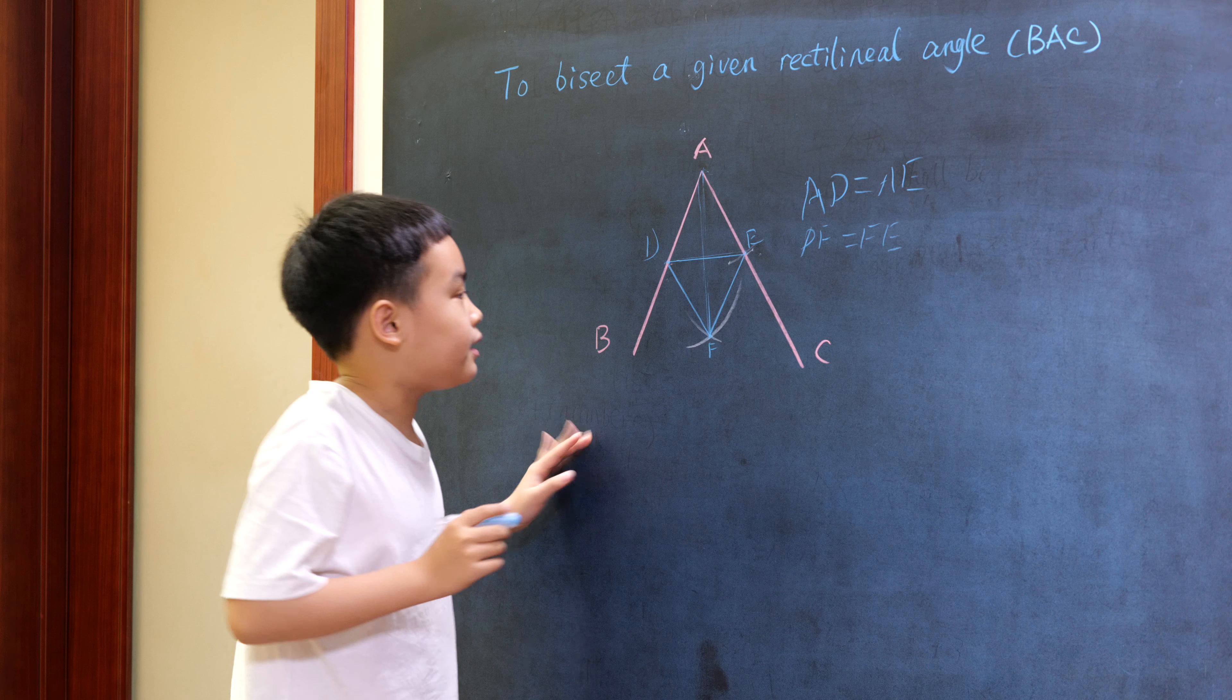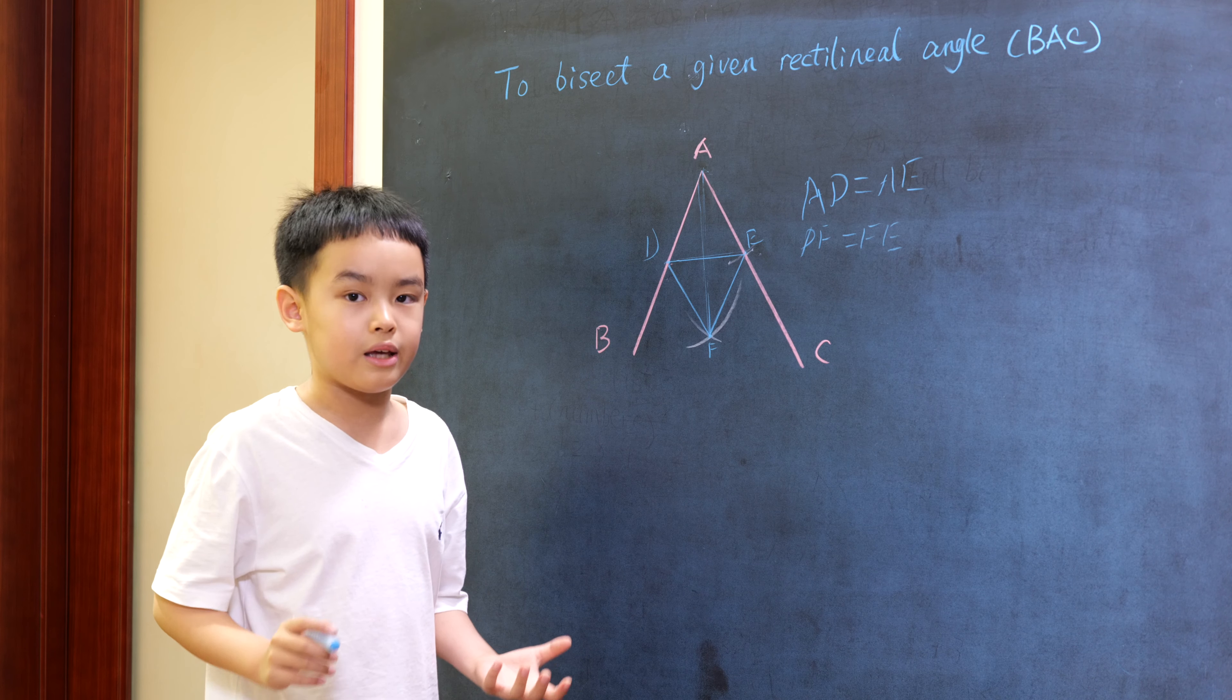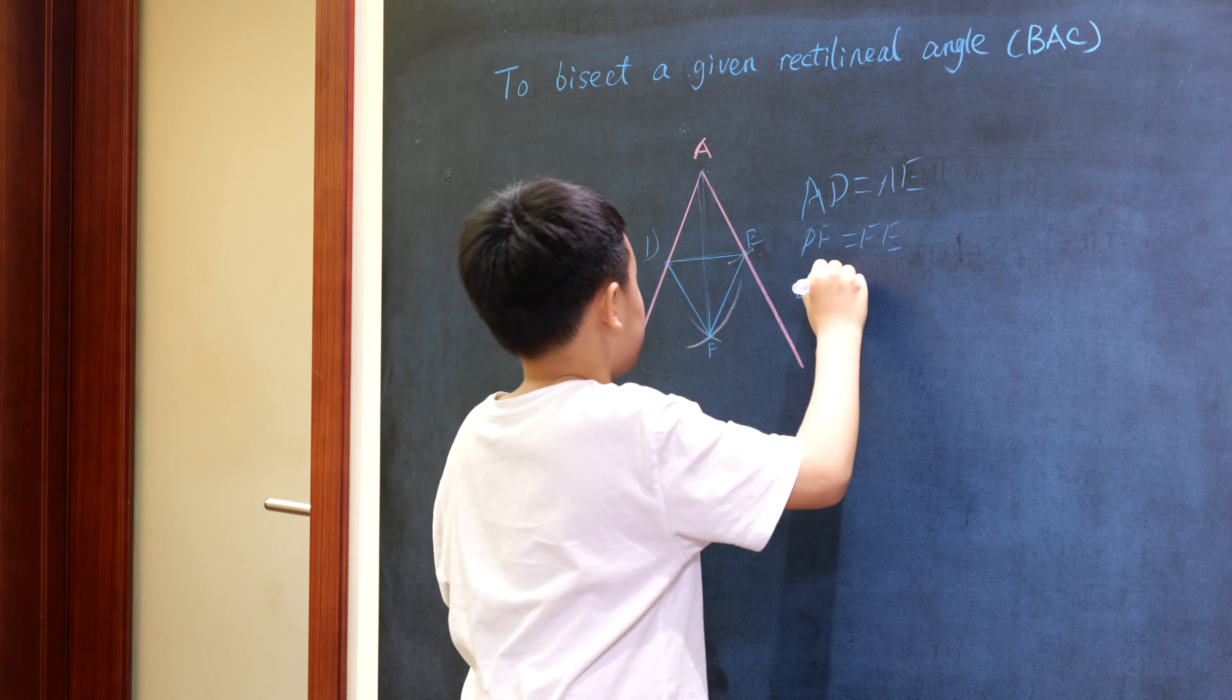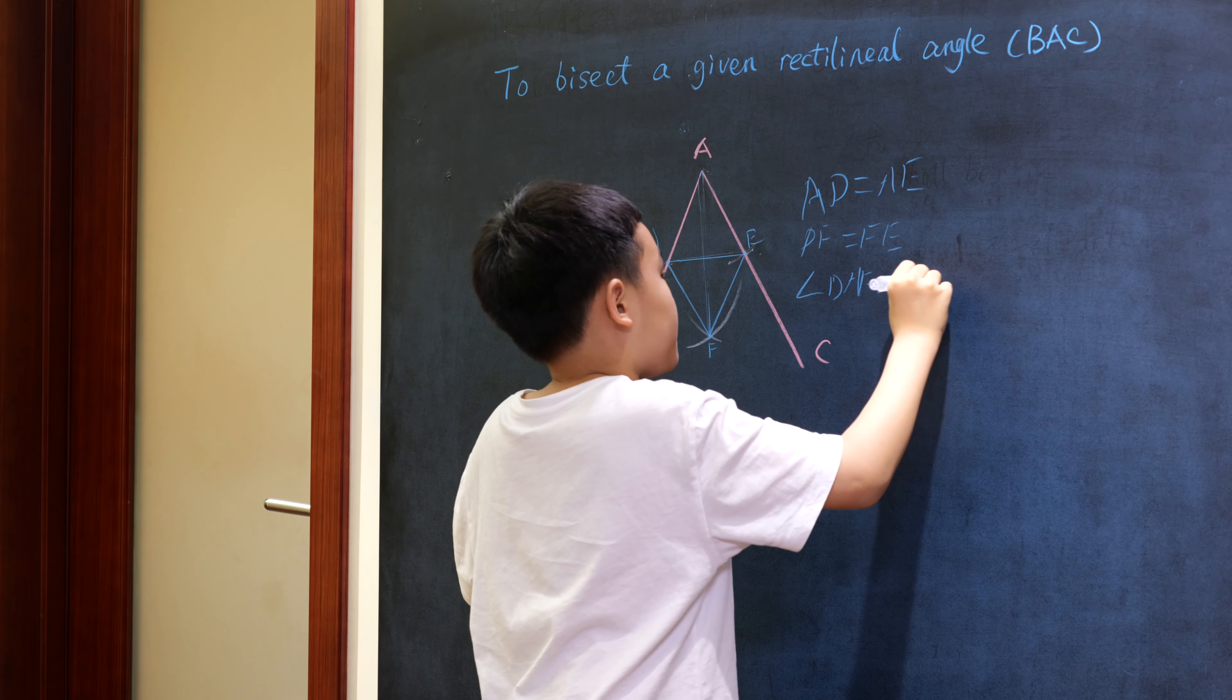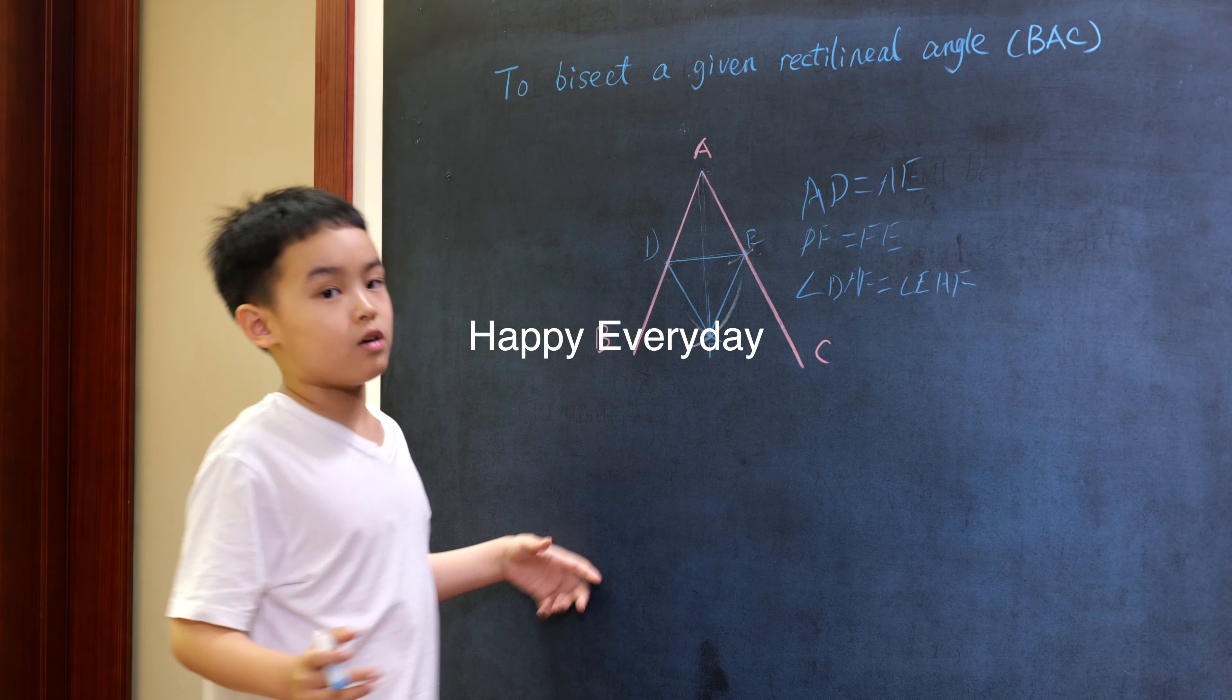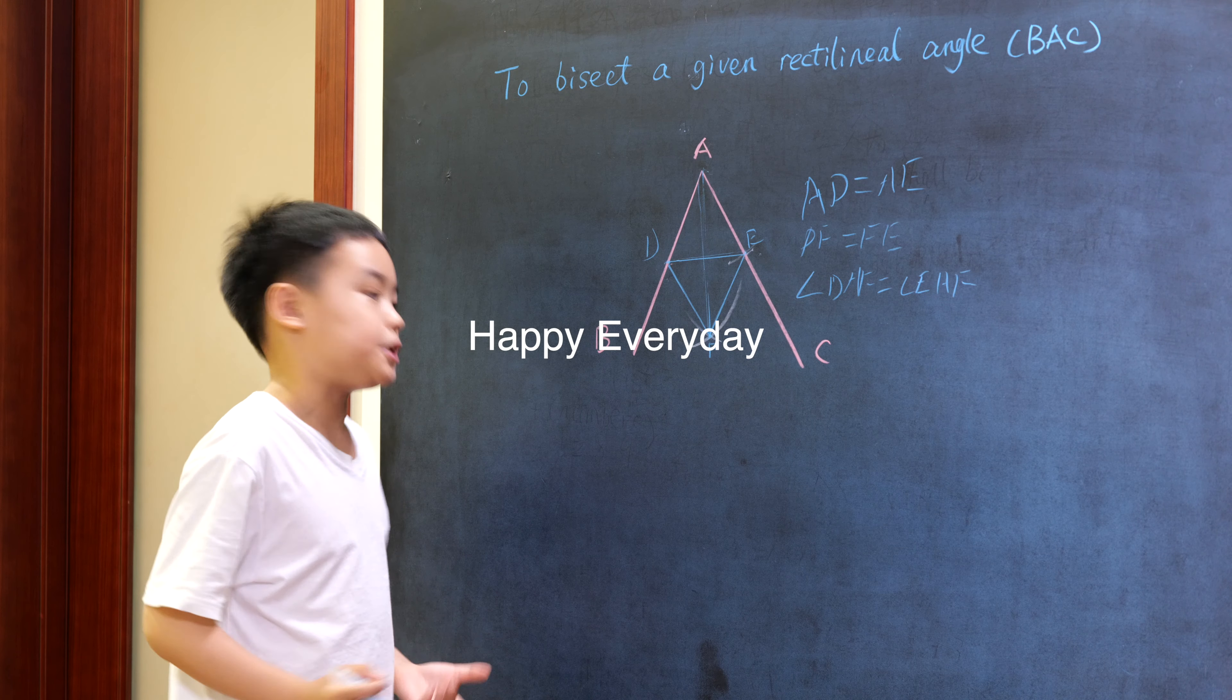Therefore, triangle ADF is congruent to triangle AEF, which means angle DAF equals angle EAF. So AF bisects the given angle BAC. In the next step, let's move on.